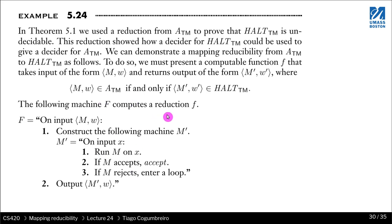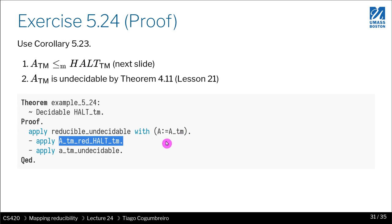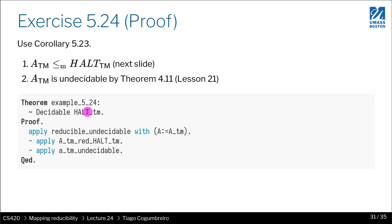The proof is very simple, as explained in the first sentence. We use corollary 5.23: we will show that ATM is map reducible to Halt-TM, and since ATM is undecidable — by theorem 4.11, proved in lesson 21 — therefore Halt-TM is undecidable. So we are left with showing that ATM is map reducible to Halt-TM. Proving undecidability using map reducibility becomes trivial — it's just the application of a single corollary.